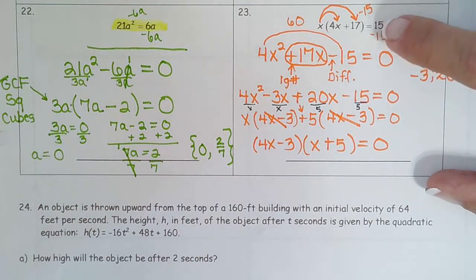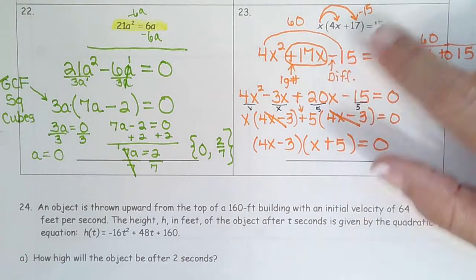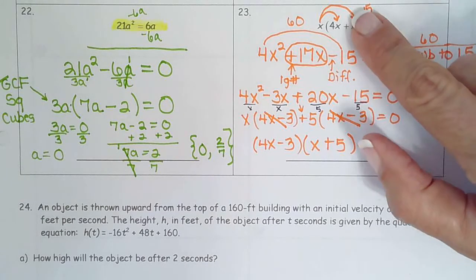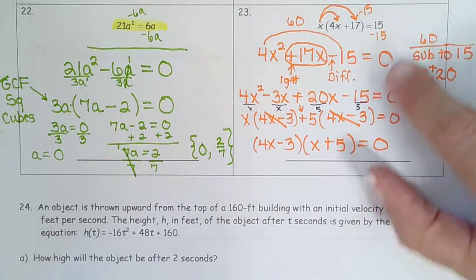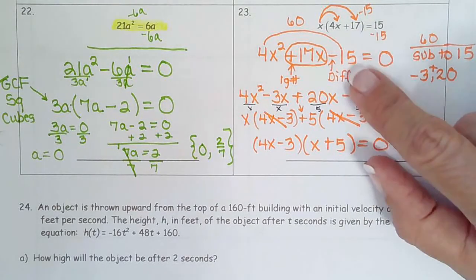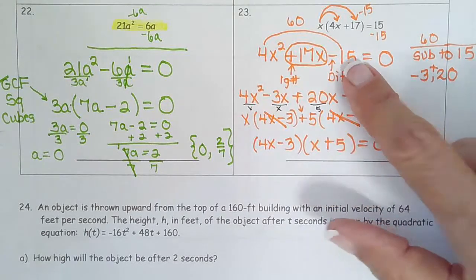So we saw that it wasn't set equal to 0 but before you could set equal to 0 you had to distribute. Then we subtract 15, subtract 15 from both sides because you have to do the opposite to move it over. There wasn't a GCF